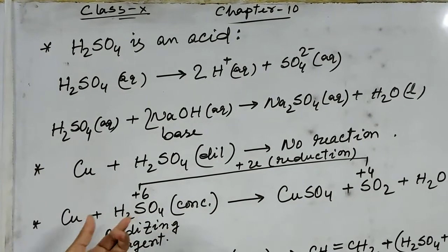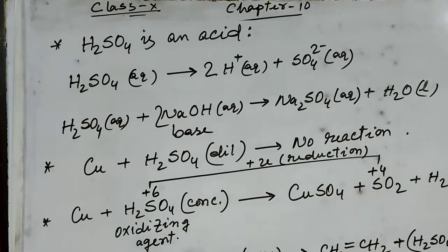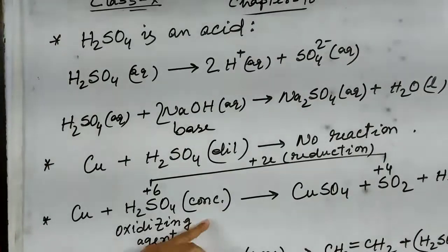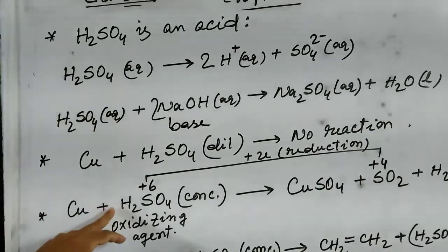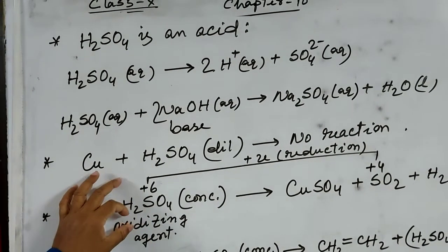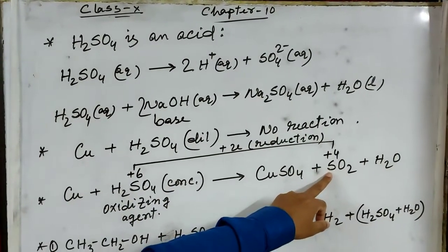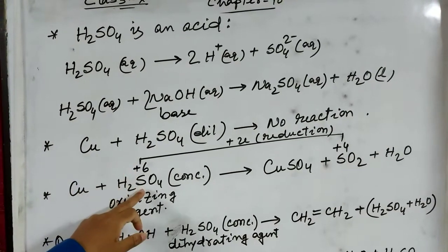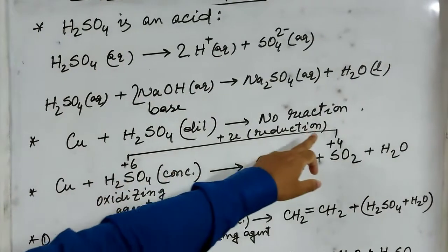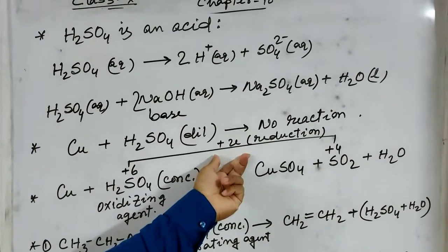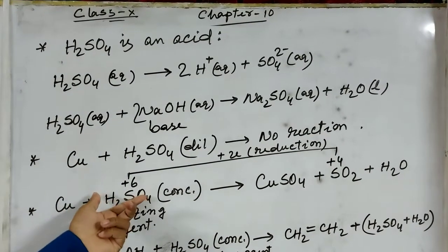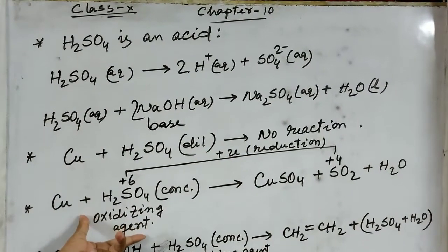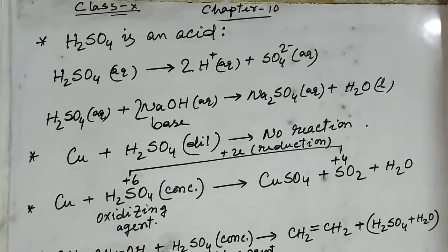Concentrated sulphuric acid reacts with copper to produce copper sulphate, sulphur dioxide, and water, because concentrated sulphuric acid has oxidizing property — it is a very strong oxidizing agent. The oxidation number of sulphur in sulphuric acid is +6, and in sulphur dioxide it is +4. The oxidation number of sulphur decreases from +6 to +4 by accepting 2 electrons — this is a reduction reaction, and the reactant accepting electrons is the oxidizing agent. Therefore, concentrated sulphuric acid is an oxidizing agent.